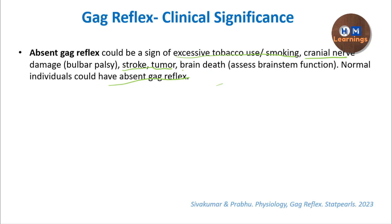A very important clinical application is assessing brain death. The gag reflex center is the medulla; the pupillary reflex center is the midbrain; and the corneal/conjunctival reflex involves the pons. Together, these cranial nerve reflexes assess the entire brain stem — midbrain, pons, and medulla. Checking the pupillary reflex, corneal/conjunctival reflex, and gag reflex is essential for declaring brain death, since brain stem functions are critical for survival.